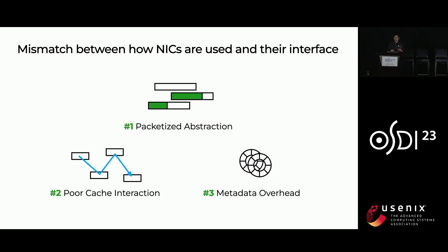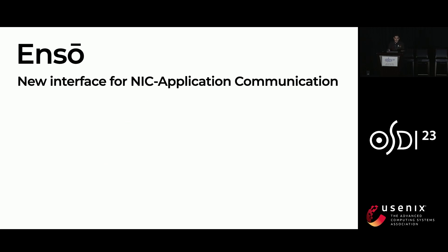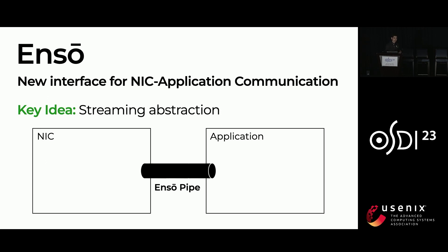I showed these three problems, and I argue that this is a fundamental mismatch between how NICs are used and the interface that they provide. The natural question now is: can we do better? Can a different NIC interface avoid all these problems? And the answer, of course, is yes. Our proposal for such a NIC interface is ANSO, and the key idea is that we're going to replace the packetized abstraction with a streaming abstraction. ANSO provides a primitive that we call an ANSO pipe, and NIC and application can communicate using the ANSO pipe via arbitrary byte streams.